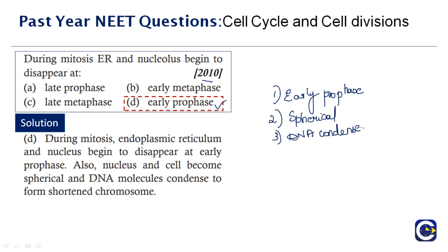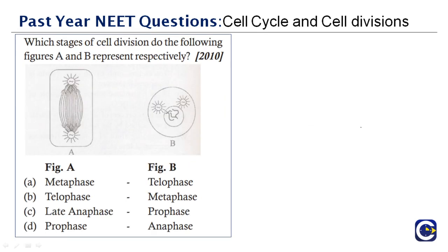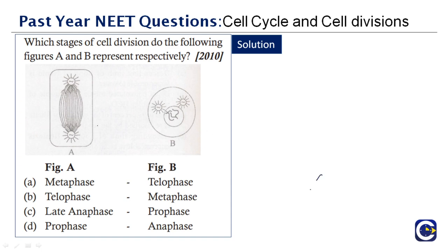Question from 2010: 'Which stage of cell division do figures A and B represent respectively?' Options include metaphase/telophase and telophase/metaphase. Figure A cannot be metaphase or telophase based on the spindle fiber arrangement. The correct answer is option C: figure A represents late anaphase and figure B represents prophase.